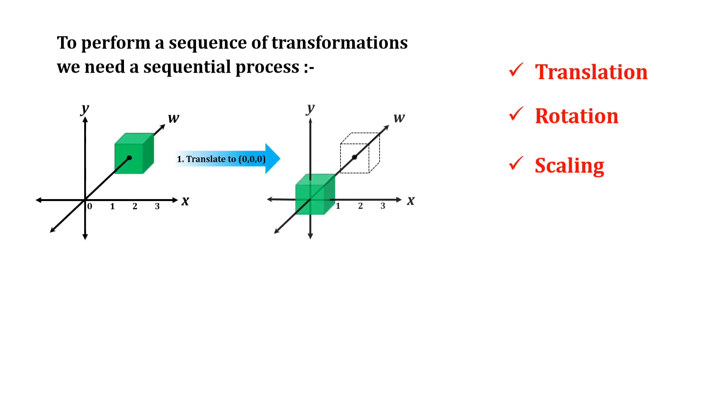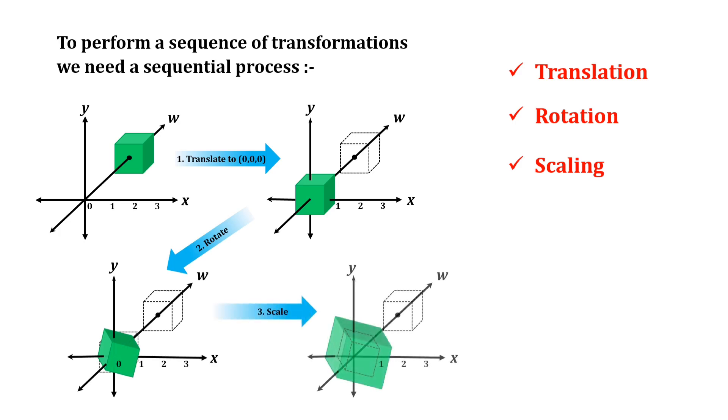After that, the translated coordinates are rotated and scaled. Finally, the point or object is translated back to the original point.